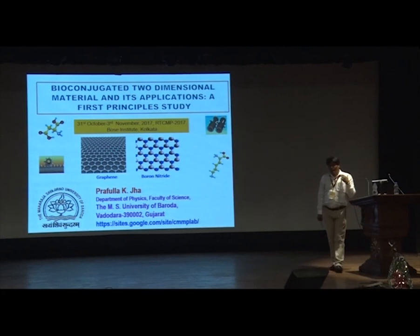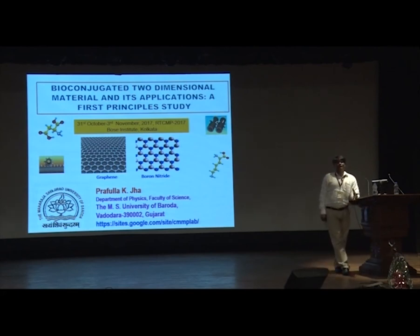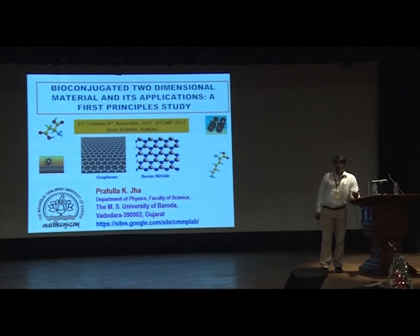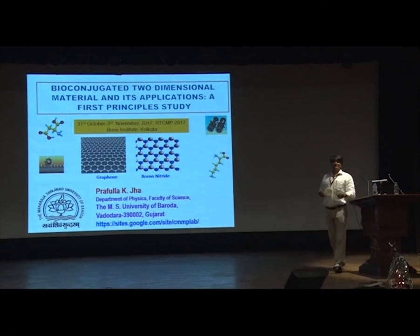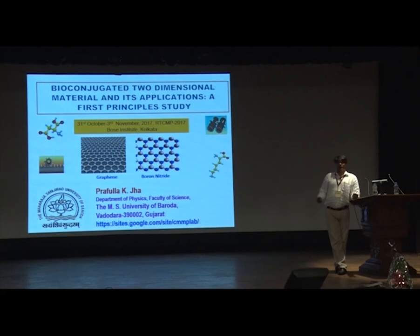As far as the biomolecules are concerned, I am considering three different sets: amino acids — not all, but five to six of different configurations — then nucleobases, and then alkaloids, all attached with three different boron nitride systems: the boron nitride sheet, boron nitride nanotube, and nano-ribbon.